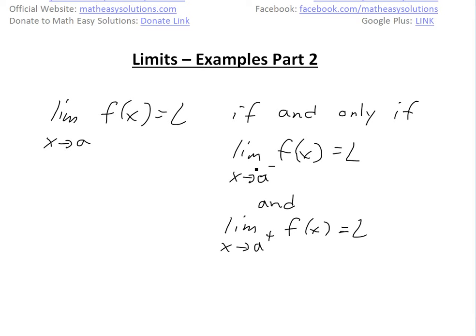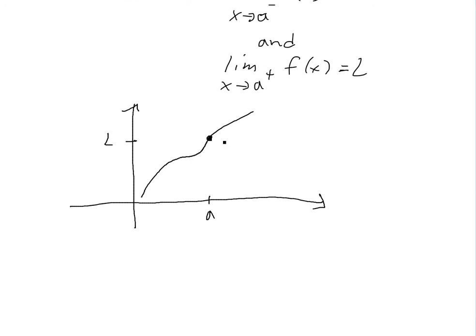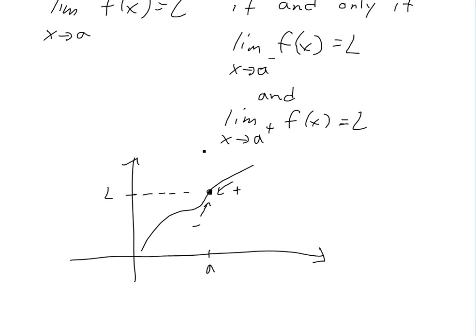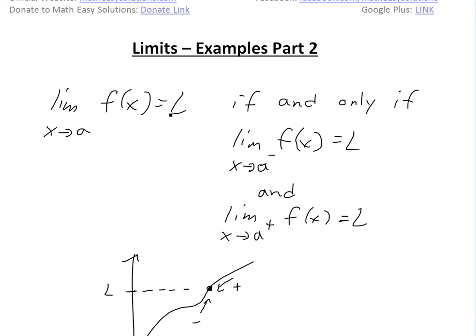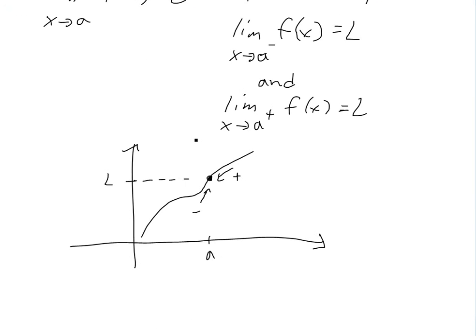This just means that if you have a function f(x), the limit only exists if you're approaching from both sides. The limit from the left and right of a must both equal L — that's the only way the limit exists. So now we'll use this for some examples.